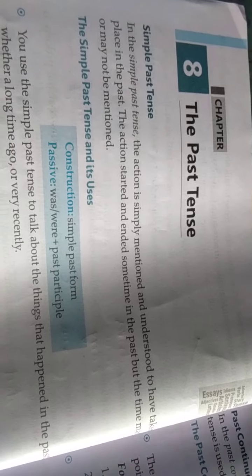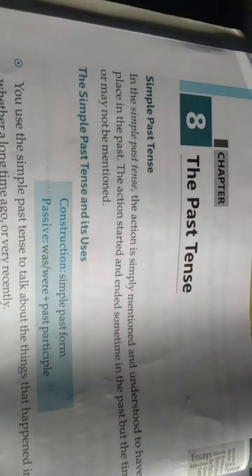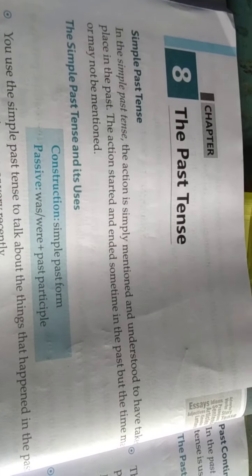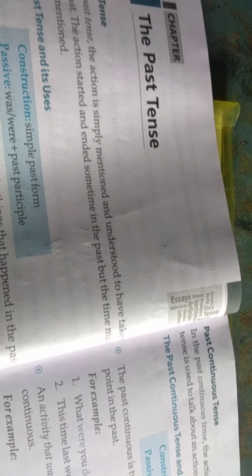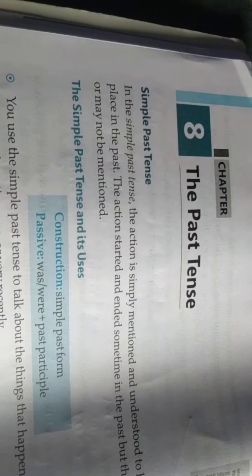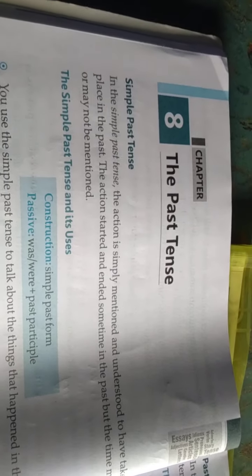In the simple past tense, the action is simply mentioned and understood to have taken place in the past. The action started and ended sometime in the past, but the time may or may not be mentioned.